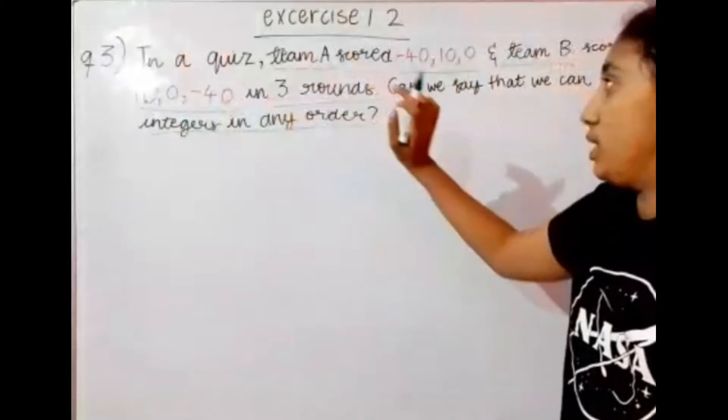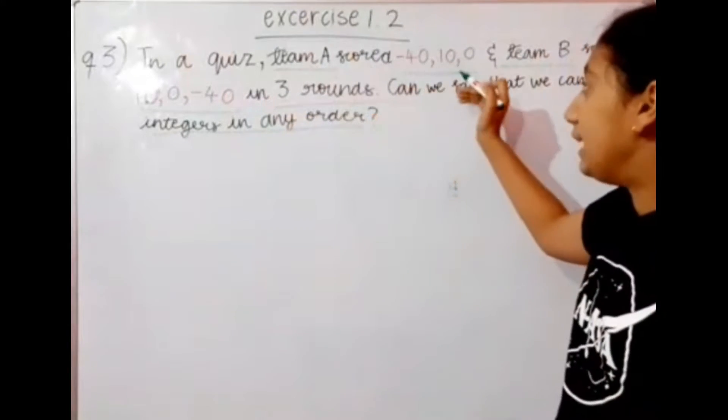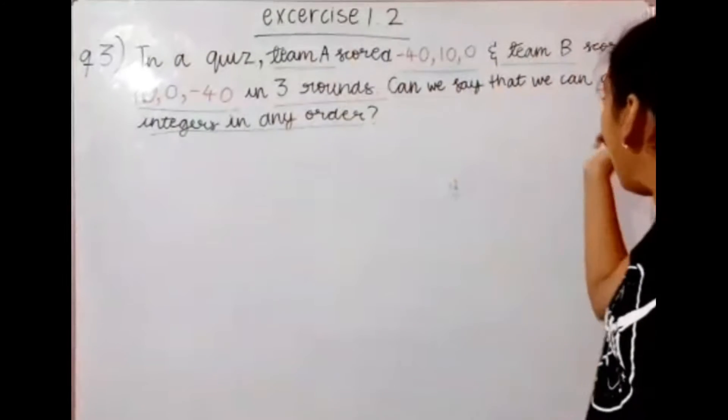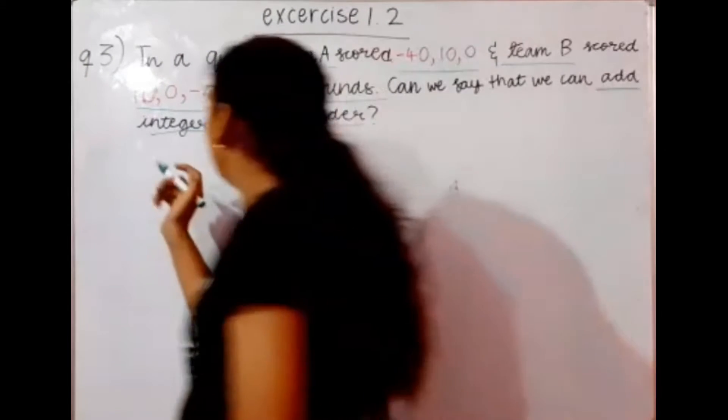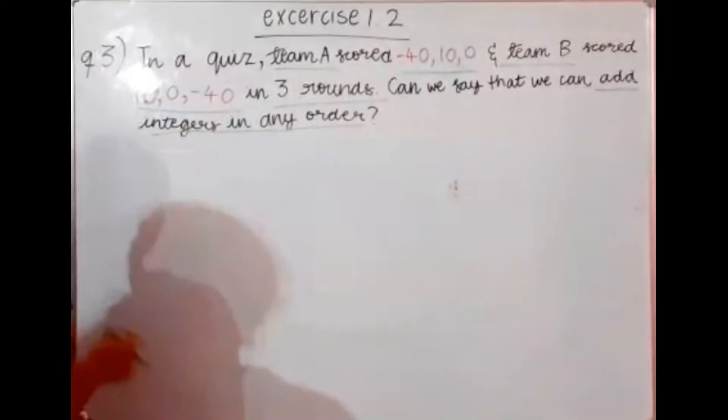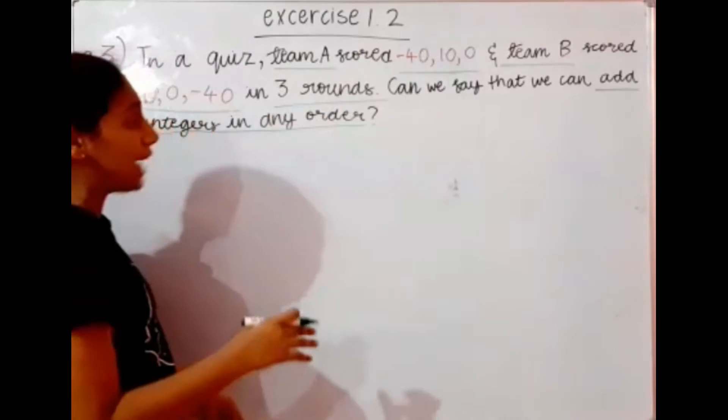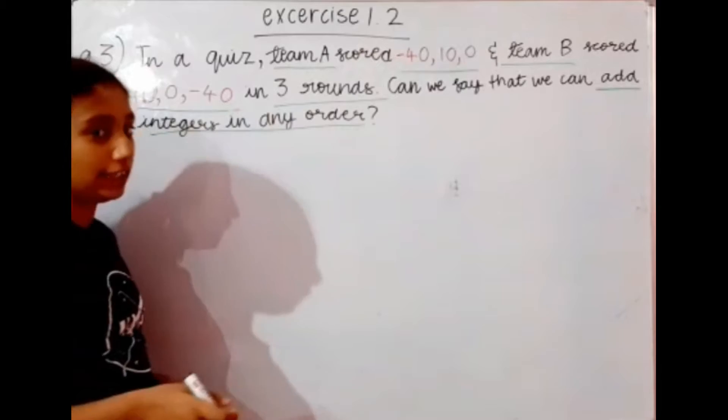Question number 3 says, in our quiz, team A scored minus 40, 10 and 0 marks, and team B scored 10, 0 and minus 40 marks in 3 rounds. Can we say that we can add the integers in any order?